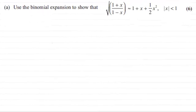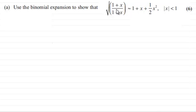Hi there. For this question we're asked to use the binomial expansion to show that the square root of the fraction 1 plus x all divided by 1 minus x is approximately 1 plus x plus a half x squared, for the modulus of x being less than 1.